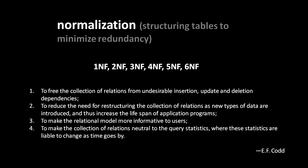In bullet three, Codd says normalization makes the relational model more informative to users. By 'informative', he means that someone looking at the schema should find it quite evident what any one table's purpose is. In an improperly designed schema, tables tend to have nebulous roles where it's unclear what purpose they serve or how they relate to other tables.